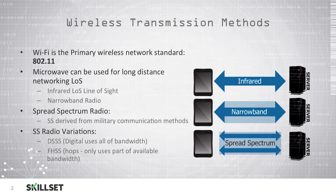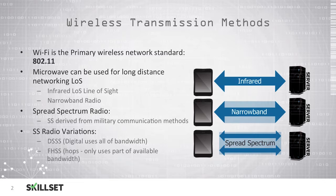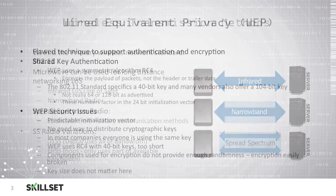Spread-spectrum technology was derived from military communication methods, and there are two variations. We have direct-sequence spread-spectrum, or DSSS, which is digital and uses all of the available bandwidth. We also have frequency-hopping spread-spectrum, or FHSS, where the signal will hop among available frequencies, and it only uses a portion of the available bandwidth.